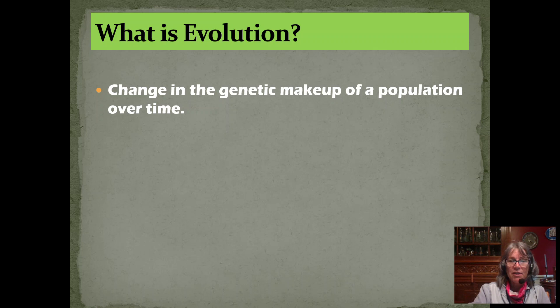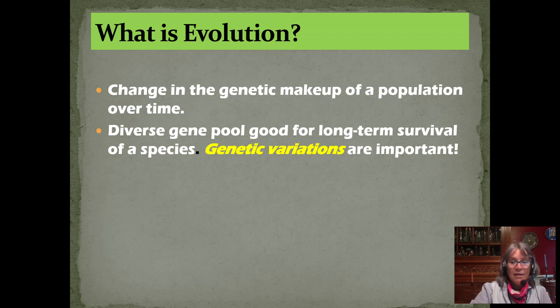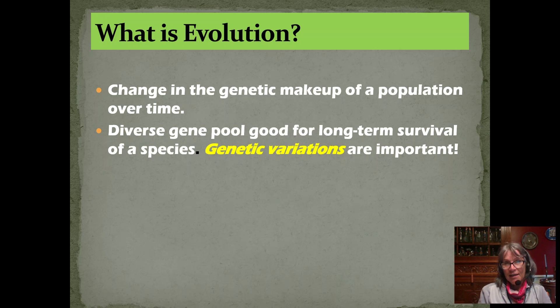So what is evolution? When we talk about evolution, we're talking about a change in the genetic makeup of a population over time. These are small differences — a change in an allele, what's the allele frequency in this population now? What's the frequency of this allele at some time in the future? Does it change? The accumulation of these over time can lead to significant differences. A diverse gene pool is good for long-term survival of a species, meaning genetic variation is important. Without genetic variation, every individual is suited to the same environment.